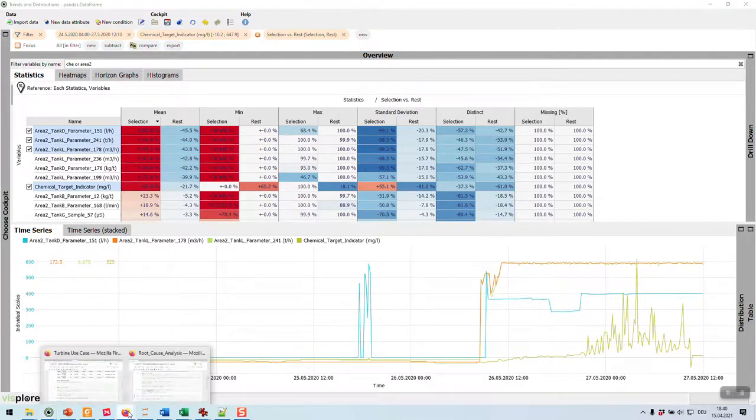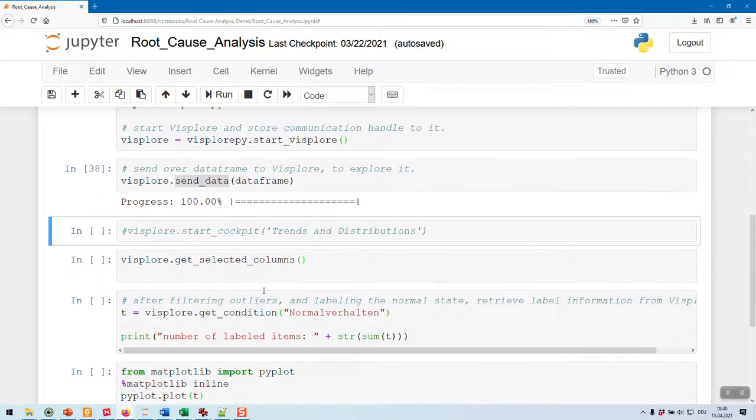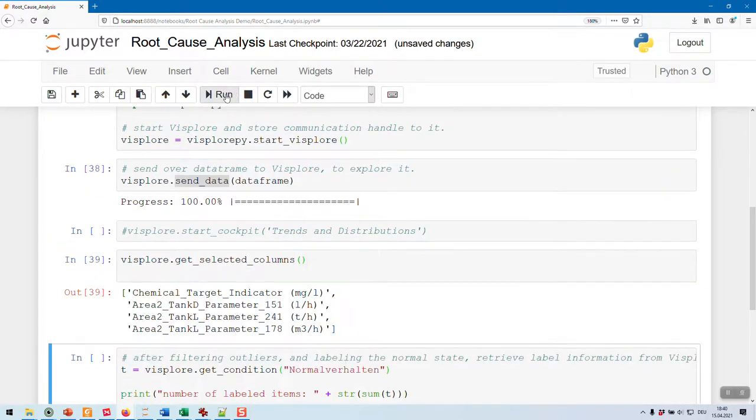To finish the use case, we could go back to Python and could let Python print out the selected variables. So basically here, the connection stays established and can get back information like this.